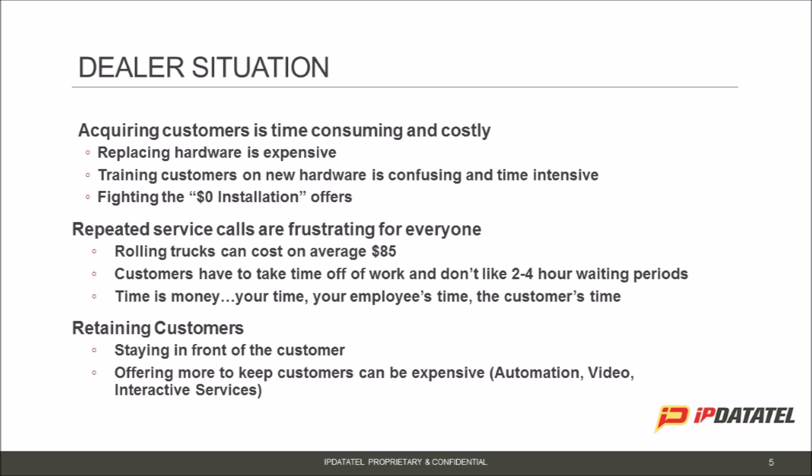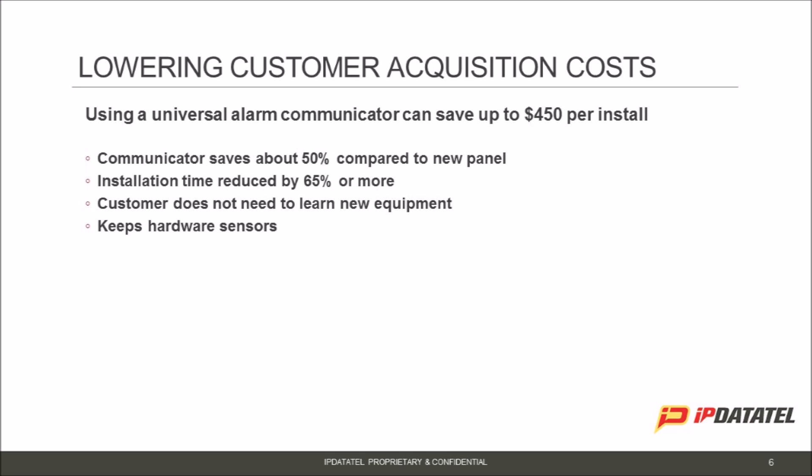Based on experience, using a universal communicator can save dealers up to $450 per installation. It drives a higher sales closing rate and reduces upfront costs — saving about 50% compared to purchasing a new wireless alarm panel with just one keypad and a couple of motion detectors. This also reduces installation time by up to 65%. Security companies can be misguided by installing a completely new wireless system when using the existing system is the best method.